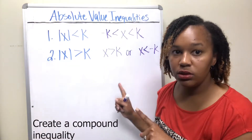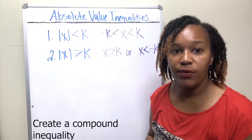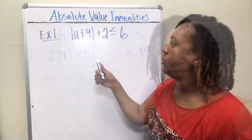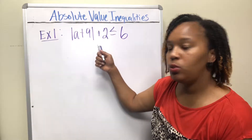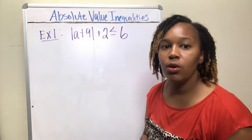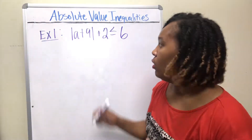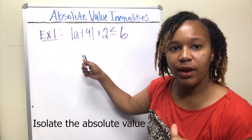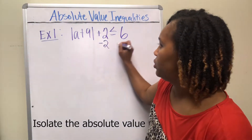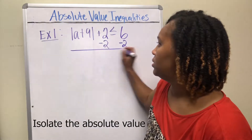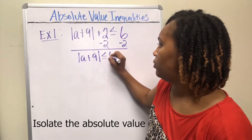Those are your two cases. Now let's look at examples of each. Example one: solve the absolute value of (a + 9) + 2 ≤ 6. To match one of those cases, first isolate the absolute value bars by subtracting 2 from both sides. That gives you |a + 9| ≤ 4.